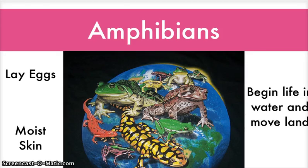Amphibians begin life in water and move on to land as adults. As they grow, their body goes through a metamorphosis, or change. They lay eggs in the water and the eggs stay there until they hatch. Young amphibians live in the water and breathe with gills.